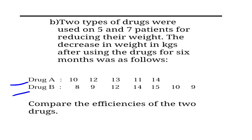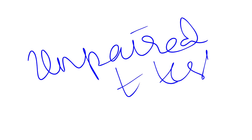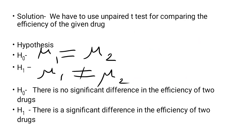What you have to use? You have to use unpaired t-test, because you are having two significant independent samples. So use unpaired t-test. To find out the solution, we have to use unpaired t-test for comparing the efficiency of these two drugs.